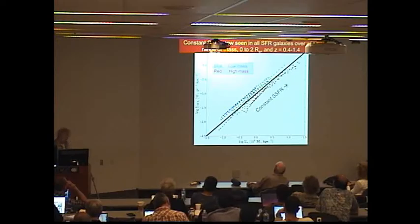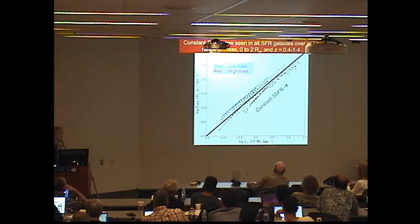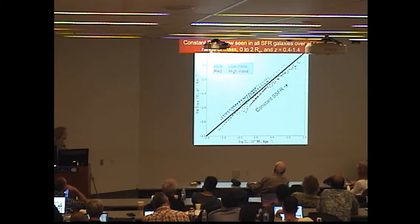Plot versus the local stellar density in the galaxies. This is the star formation rate. And collectively they obey very strongly this constant star formation rate law. So now constant star formation rate has been seen inside galaxies. This is a new scaling law, not between galaxies but inside galaxies. Over a wide range of mass, 10 to the 9 to 10 to the 11. From 0 to 2 RE and over this redshift range, 0.4 to 1.4.